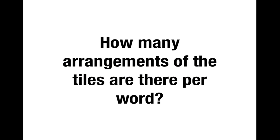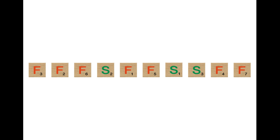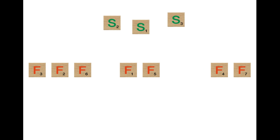The second question that we need to ask is: how many arrangements of the tiles are there per word? So let's look at a word — this is the one that we constructed a moment ago — and see how many ways there are of rearranging the tiles to get the same word. What we can do is take out the S's and put them back in again, seeing how many ways there are of doing this.